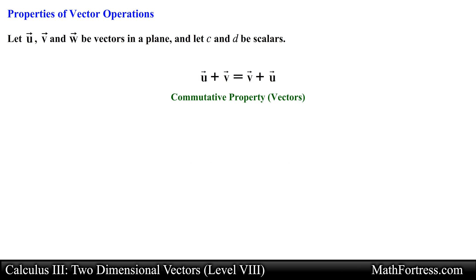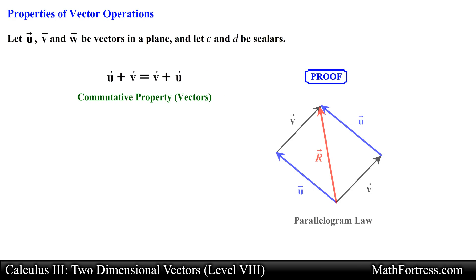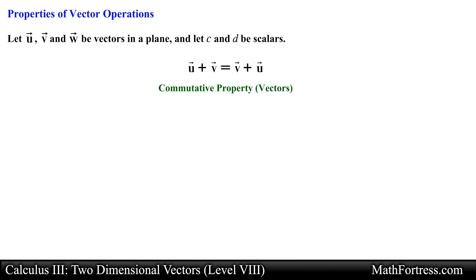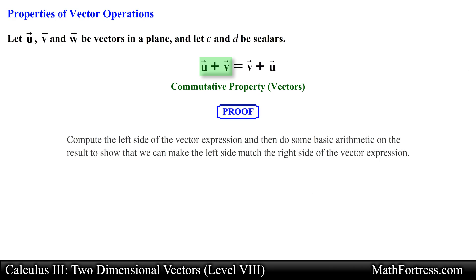This property can be verified either geometrically or algebraically. For a geometric proof we simply use the parallelogram law to illustrate this property. Notice that regardless of the order in which we add vectors v and u, we obtain the same resulting vector. Alternatively, for an algebraic proof we essentially need to compute the left side of the vector expression and then do some basic arithmetic on the result to show that we can make the left side match the right side of the vector expression.